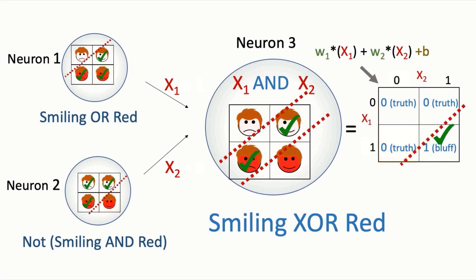Now for the cases where the face is either pale and smiling or frowning and red: neuron 1 outputs 1 and neuron 2 also outputs 1. Now neuron 3 has the AND situation it's been looking for, so neuron 3 outputs 1 — meaning your friend is bluffing. Even though neuron 3 is solving a simple linearly separable problem with respect to its own local inputs X1 and X2, it is solving a non-linearly separable XOR problem with respect to the original face input data. This example shows why multi-neuron networks are needed.